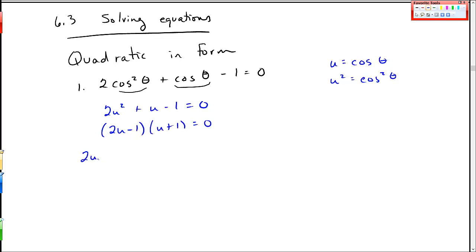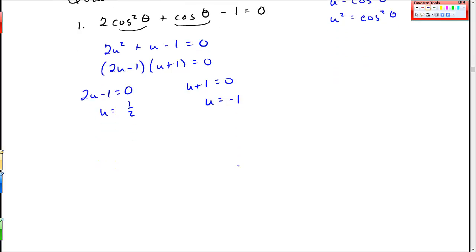So I get 2u minus 1 equals 0 and u plus 1 is 0. This is u equals 1 half and u equals negative 1. And now I go through that same process of resubstituting this back in.